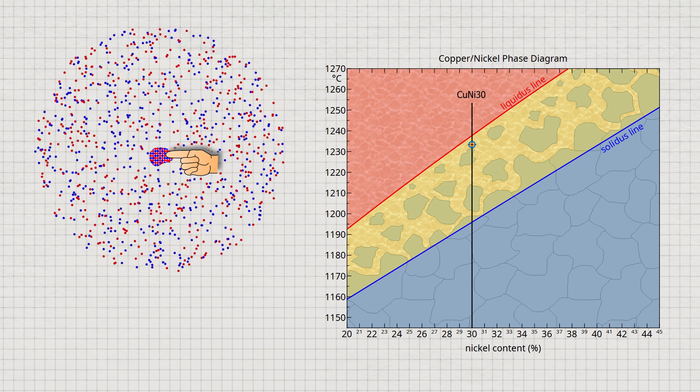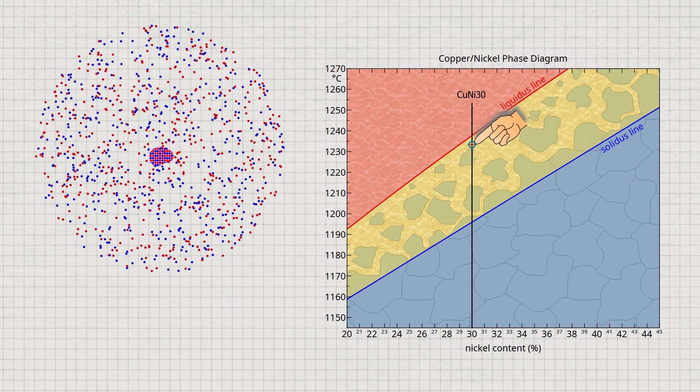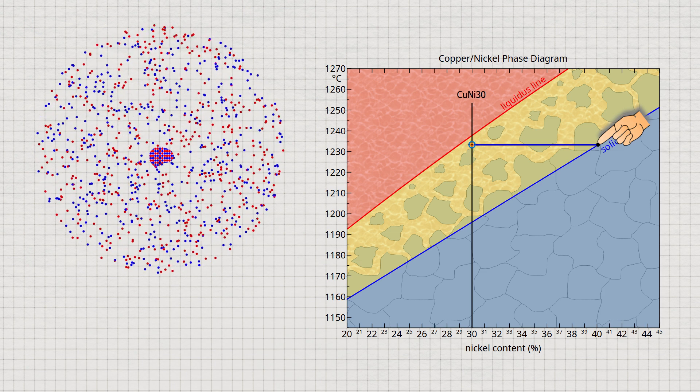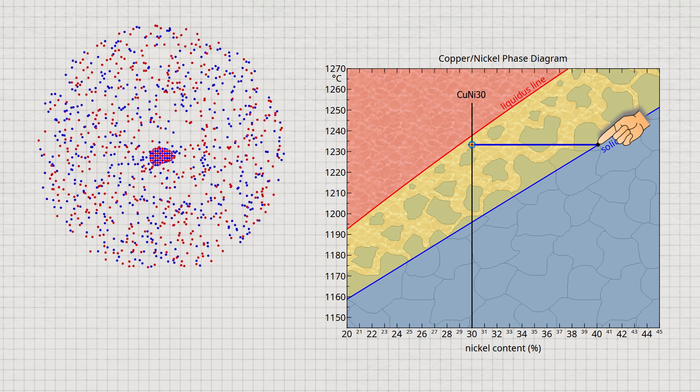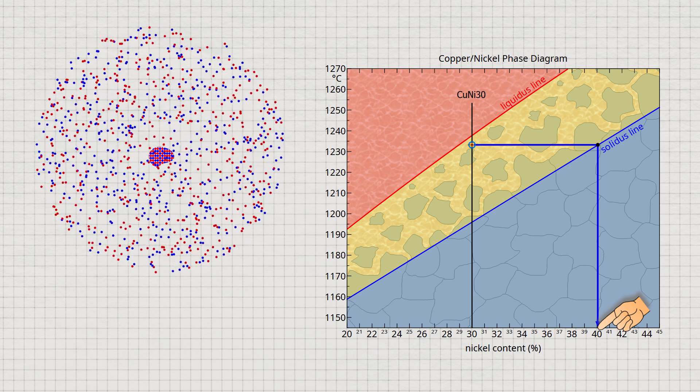During solidification, the solidus line can be used to determine the chemical composition of the solid solution formed. A horizontal line is drawn up to the solidus line at a given temperature. From this intersection, we draw a vertical line to the concentration axis and read the nickel content in the solid solution.